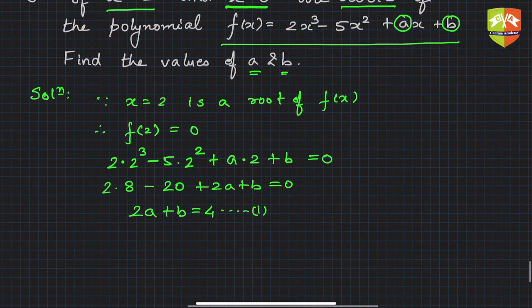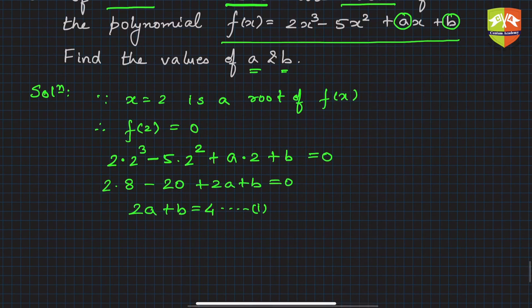Now secondly, x equals 0 is also a root of the polynomial. So we write, since x equals 0 is a zero of f(x), therefore f(0) will also be 0.